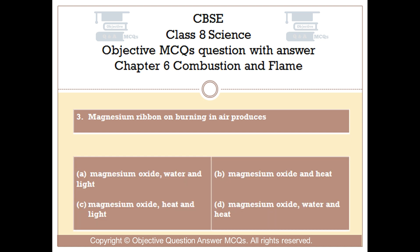Question number 3: Magnesium ribbon on burning in air produces — Option A: magnesium oxide, water and light. Option B: magnesium oxide and heat. Option C: magnesium oxide, heat and light. Option D: magnesium oxide, water and heat. The right answer is Option C.